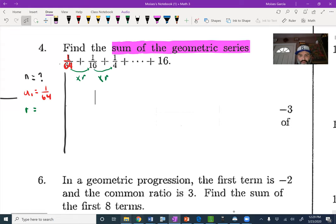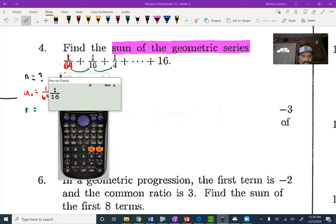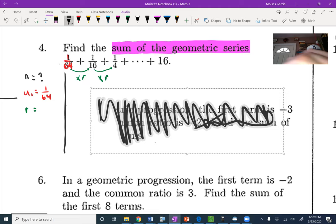We can figure that out by dividing, in this case dividing the second number, 1 over 16, divided by 1 over 64, and that's times 4. So from this we can see that we're multiplying by 4 each time.